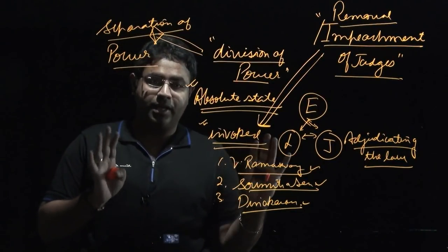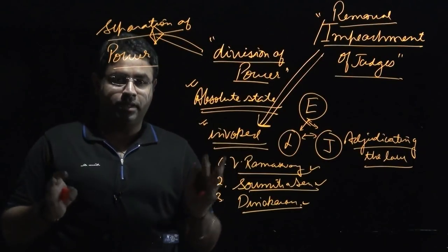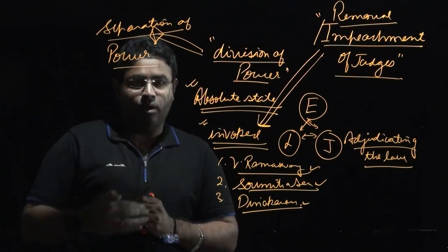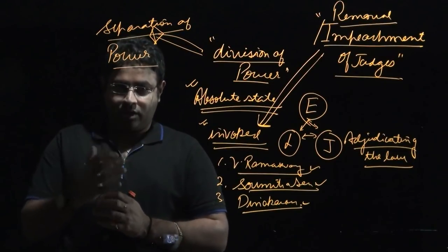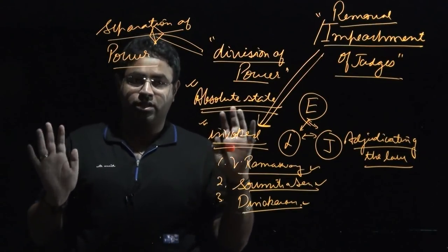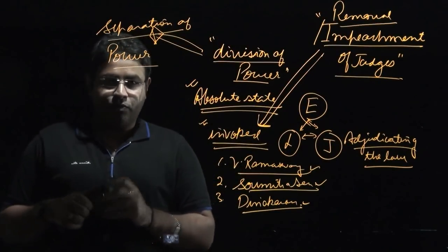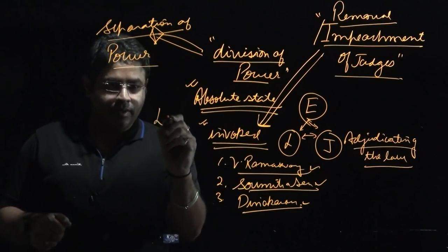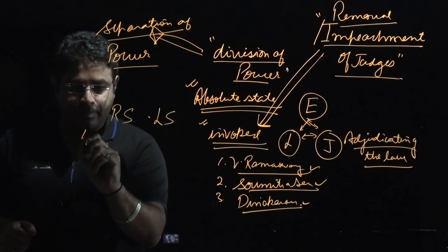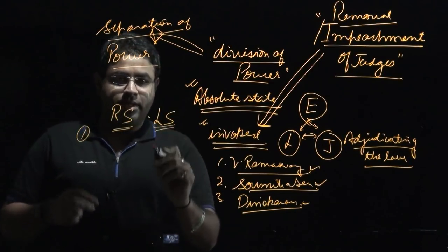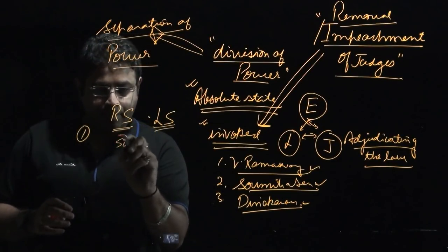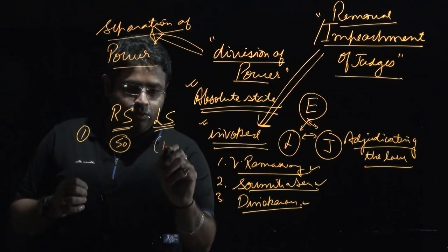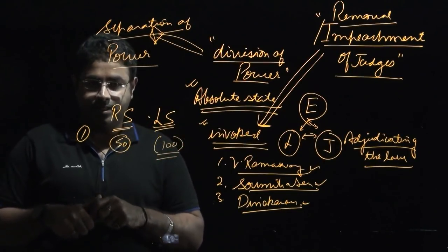The entire procedure about the impeachment is contained under Article 124, subsection 4 of the Indian Constitution, which details how this impeachment process should be conducted. For the impeachment, a minimum number has been given with respect to the Lok Sabha and the Rajya Sabha. In the Rajya Sabha, at least 50 members of parliament should propose the removal, and with respect to the Lok Sabha, it is 100 members of parliament.